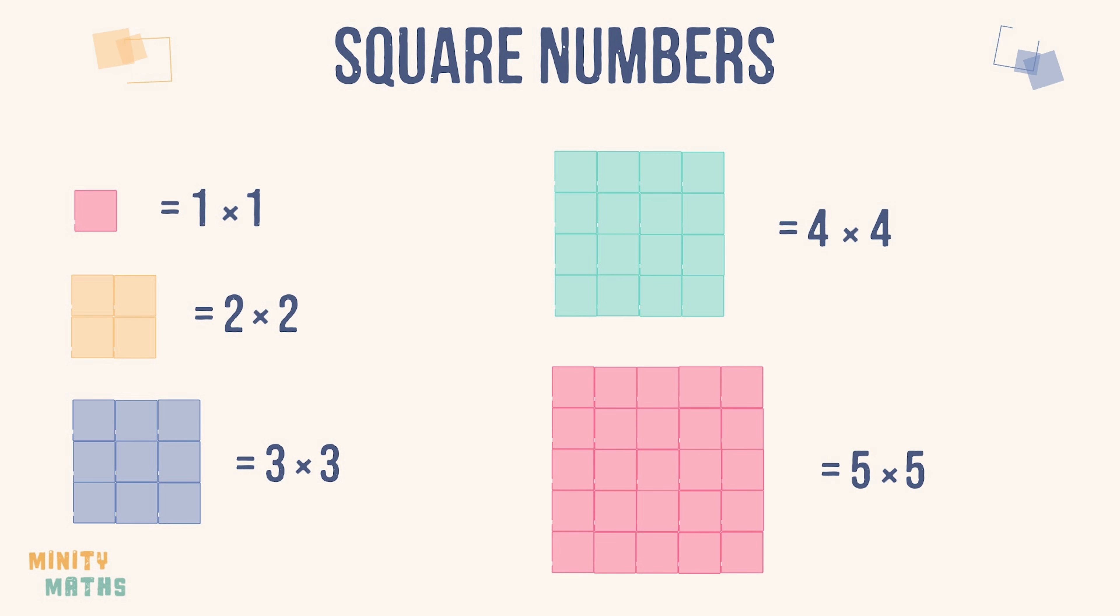We can represent the process of squaring a number by using an exponent. When you see a power 2 exponent, it can be read as squared.